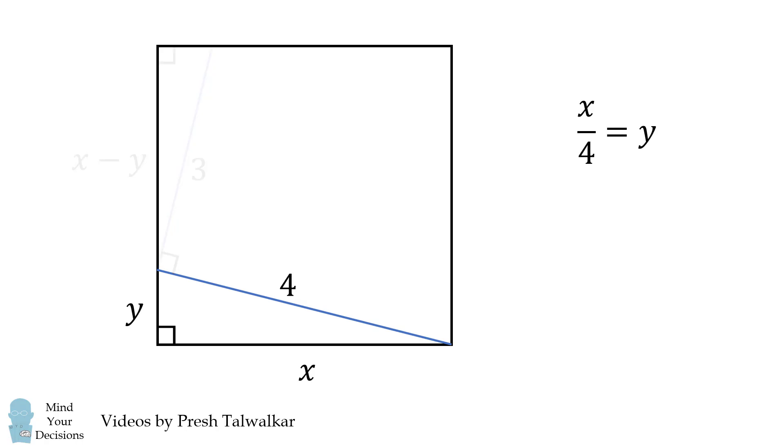We'll substitute that in to our diagram here. We can now solve for X because we have a right triangle, and we're going to use the distance formula. X squared plus the quantity X over 4 squared is equal to 4 squared.